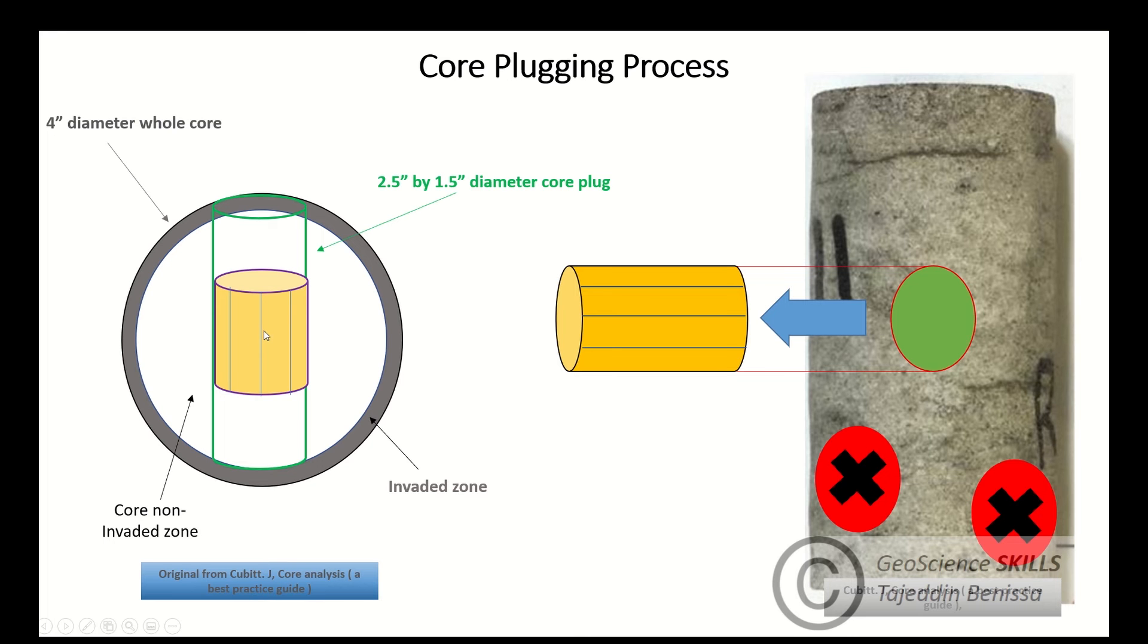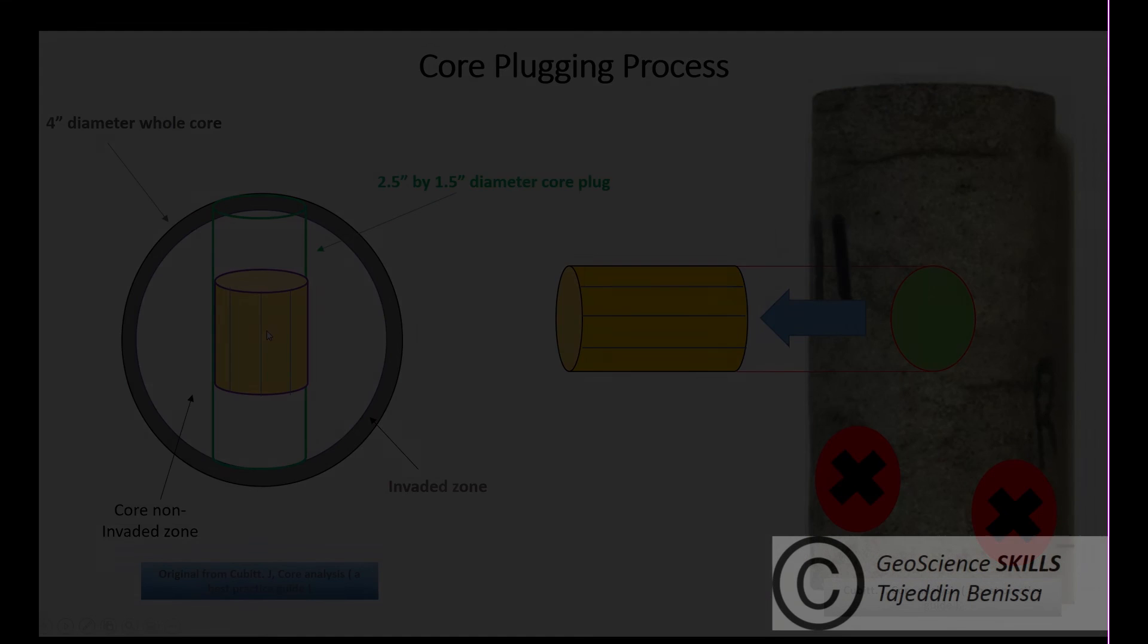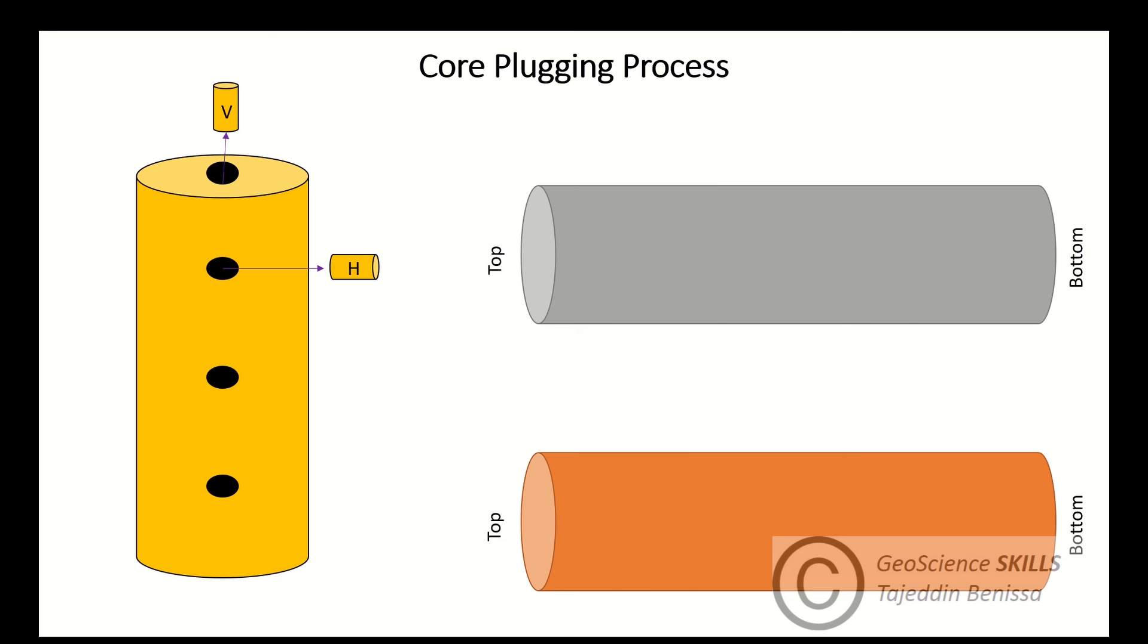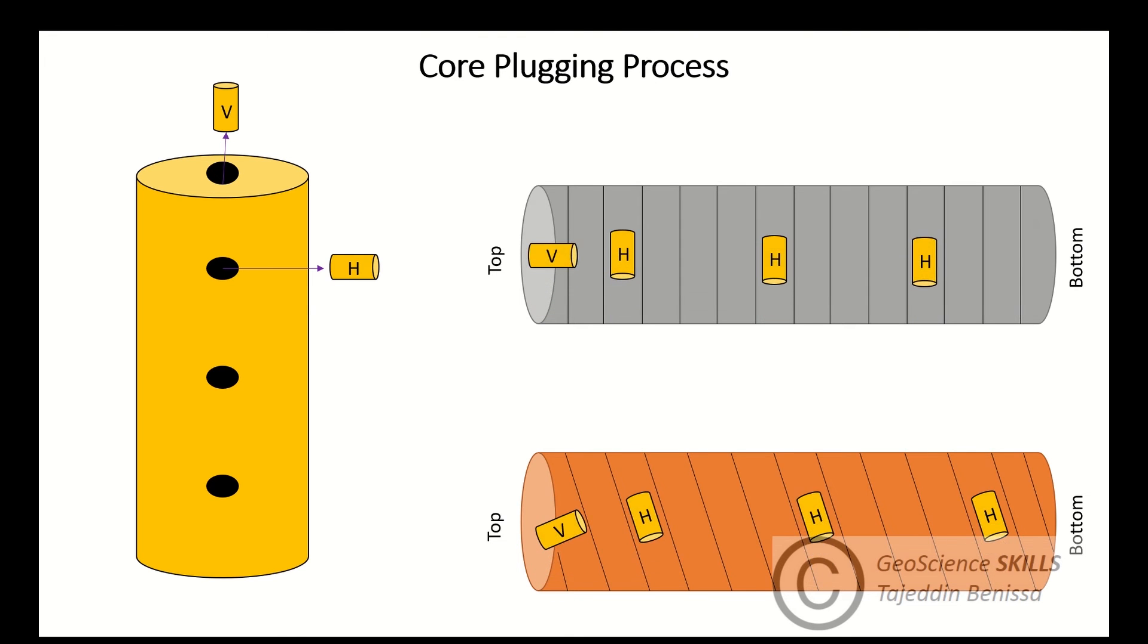Vertical plugs are also essential for reservoir studies. They are typically used for rock mechanic tests and routine core analysis. They represent key information in dual porosity-permeability systems such as in carbonate reservoirs. The vertical plugs are usually taken perpendicular to the maximum depth of the bedding plane. They should also be cut as close as practicable to the location of the horizontal plugs to allow for comparative datasets.